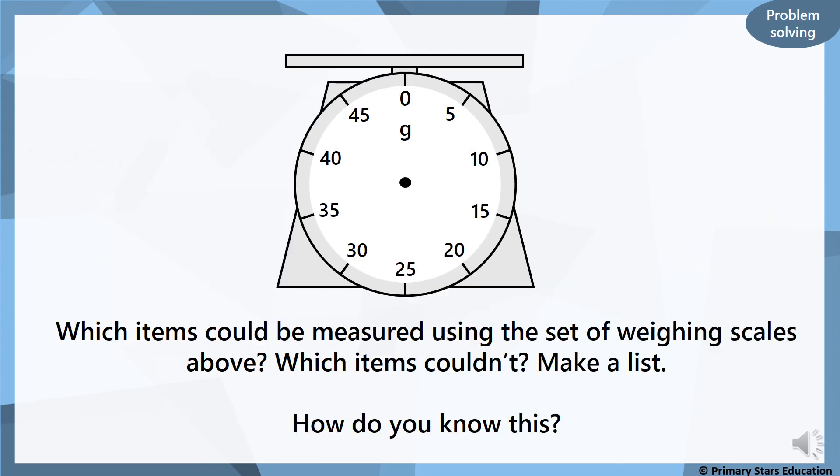Which items could be measured using the set of weighing scales above and which items couldn't? Make a list. You can do this on your whiteboard or you can do it through a discussion at home or just thinking about it yourself. So the top measurement on this scale is 45, the top number. So which items do you think you could measure using this set of scales? Could you measure your car? I don't think so. Could you measure yourself? Probably not. Have a think. What do you think you could measure on this set of scales?